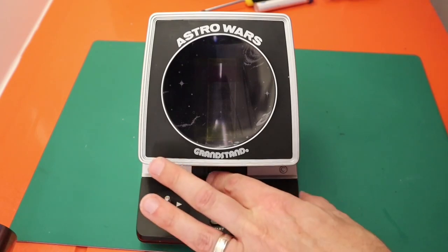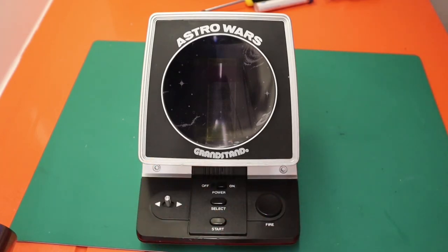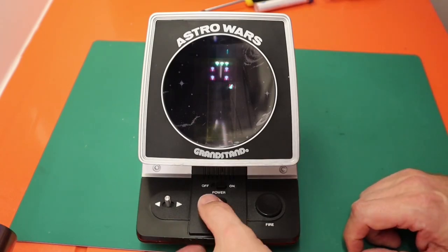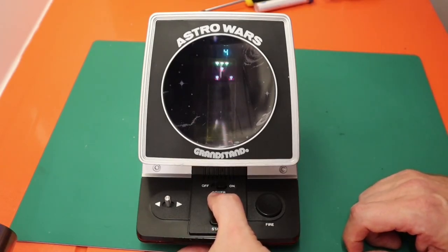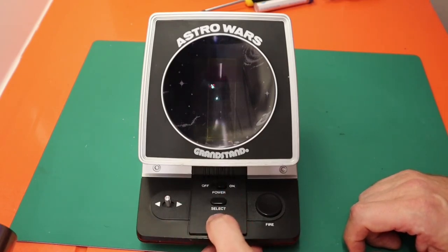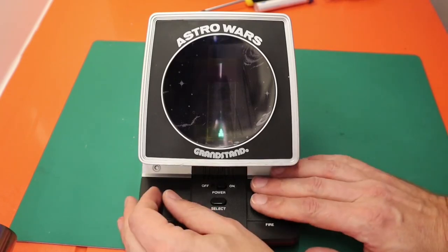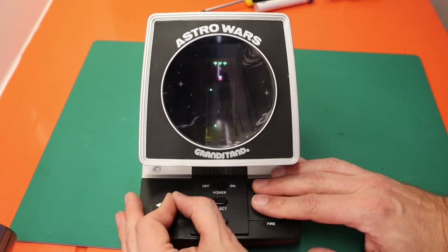Okay, so we have everything back together and everything seems to be working great. Select, I think maybe that's skill level or could be a number of plays, I think it's probably skill level, and then start, fire, left and right.